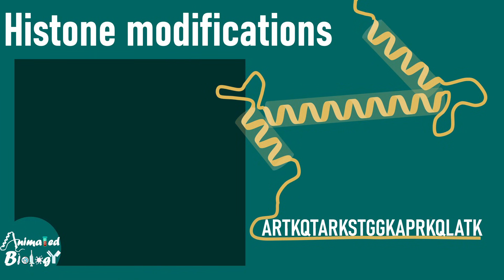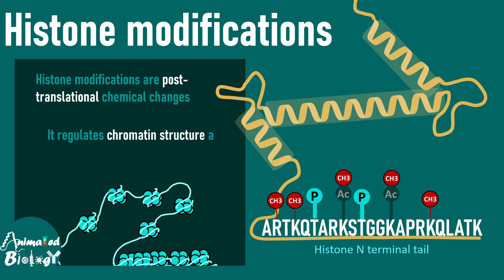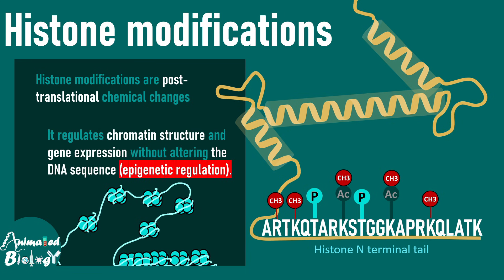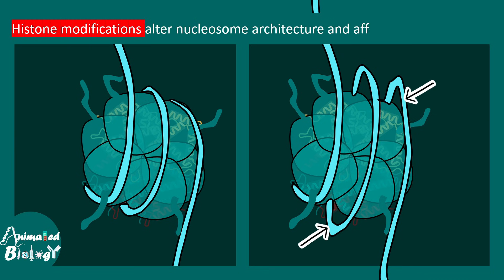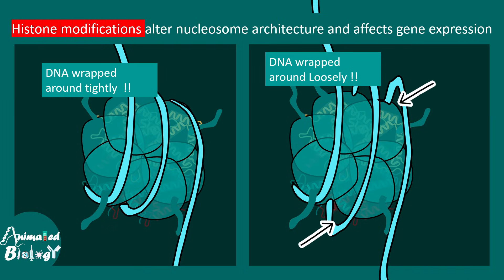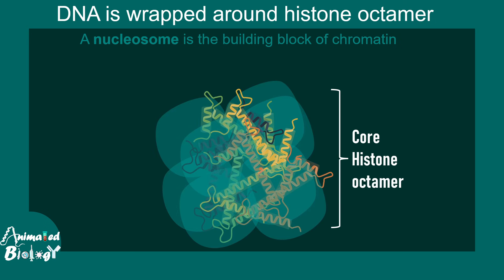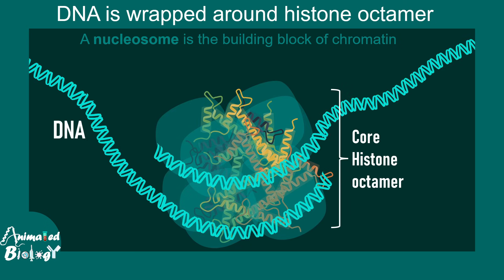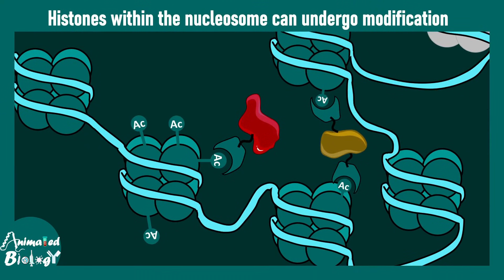Let's talk about histone modifications, which are post-translational modifications in the N-terminal tail of the histone. They regulate chromatin architecture and gene expression without altering the DNA sequence, meaning they are epigenetic in nature. DNA modifications can alter nucleosome architecture, making the DNA tightly or loosely wrapped around the core histone octamer. Nucleosomes are the building blocks of chromatin, where the core histone octamer is tightly wrapped with the help of DNA through electrostatic interactions.